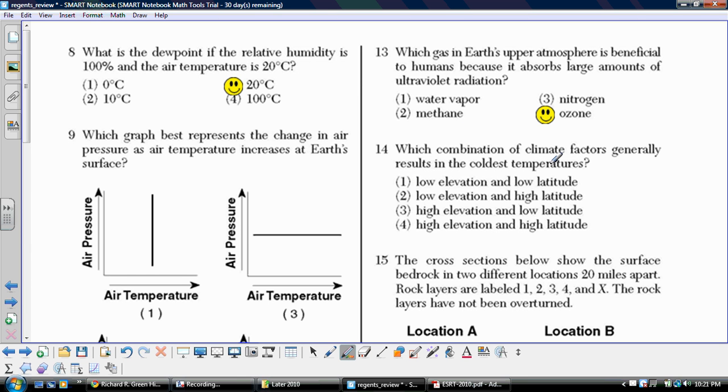Number fourteen. Which combination of climate factors generally results in the coldest temperatures? Cold temperatures, we want generally speaking higher elevations. We know higher elevations are going to have colder temperatures as long as you're in the troposphere. And then we're talking about low latitudes. Well, a lower latitude is closer to the equator where it is warm, a warm climate, whereas a higher latitude would be closer to the poles. The high elevation is definitely going to be cold, and the higher latitudes closer to the poles is absolutely cold.